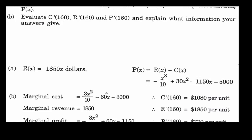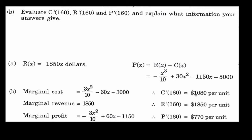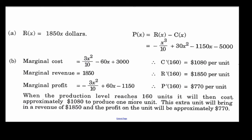Evaluating at x = 160: C'(160) = $1,080, meaning it costs about $1,080 to produce the next unit. R'(160) = $1,850 — the marginal revenue is always $1,850 regardless of units sold. P'(160) = $770. Since revenue exceeds cost at this stage, we want to keep producing — the sweet spot is when marginal revenue equals marginal cost.